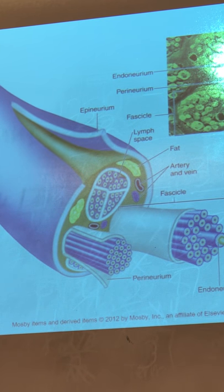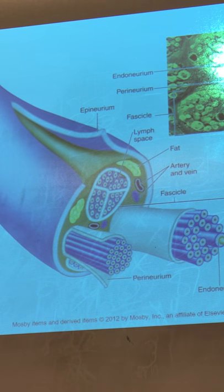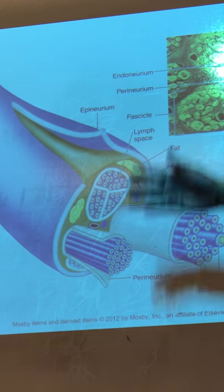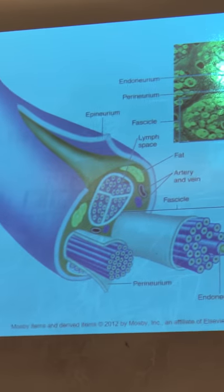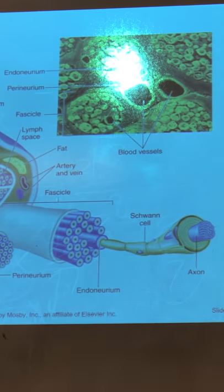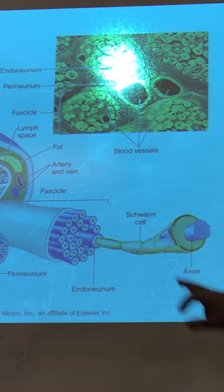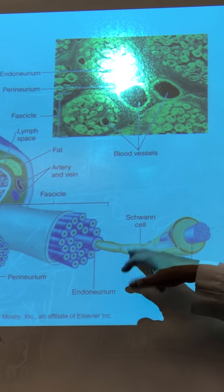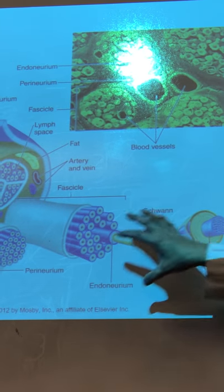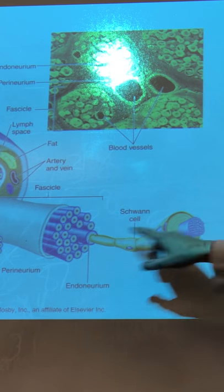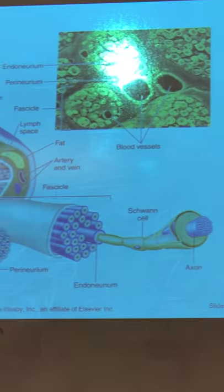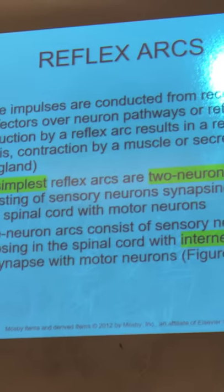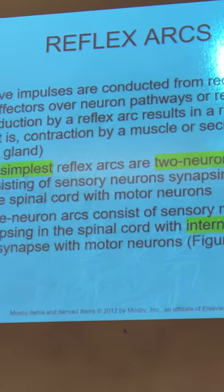This is a cross-section of the same structure. One Schwann cell will produce the myelin sheath and it will form the neurolemma.